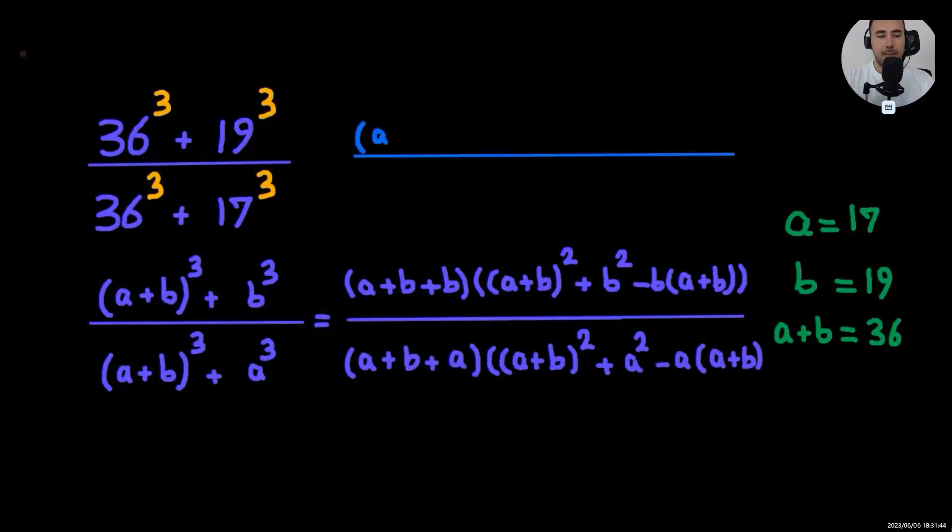Now let's expand. We know that (a+b) squared is a squared plus b squared plus 2ab.